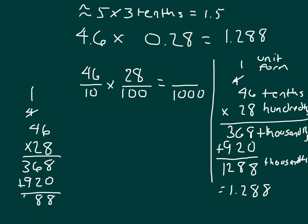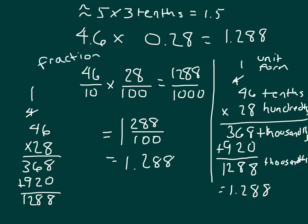We have 1,288 over 1,000, also read 1,288 thousandths. That could be written as that mixed number, and then we can write it in standard form. Written as 1.288, also read as 1 and 288 thousandths. We have a fractions approach and a unit form approach, and we are relating decimal multiplication with fraction multiplication. Enjoy your application.